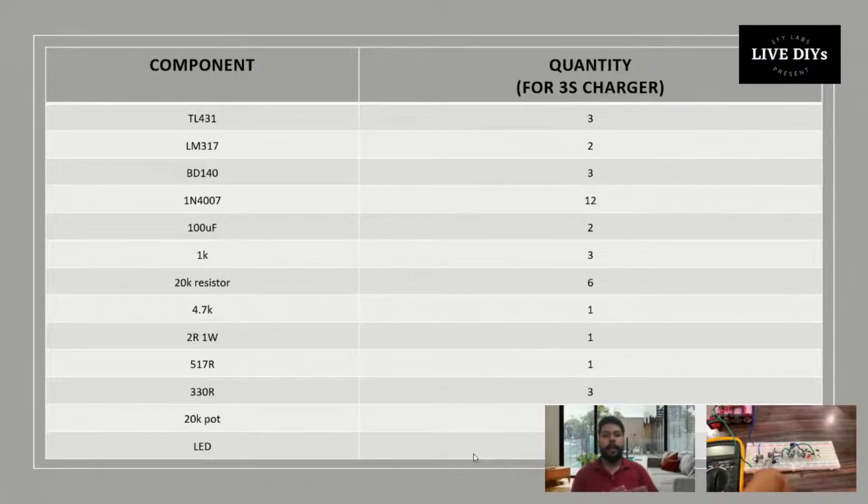For this we employ LM317 for achieving constant voltage and constant current. The component required for this circuit is a TL431, which is basically an adjustable zener diode. Then we have LM317, which is a voltage regulator. Then we have BD140, which is a PNP transistor and one of the most important components in the balance and charging part.